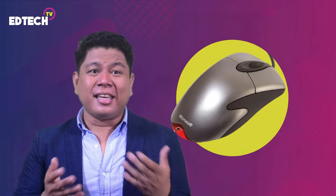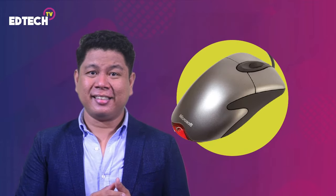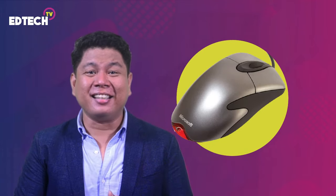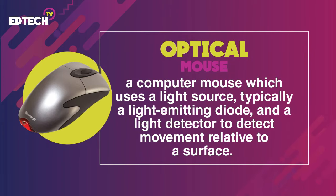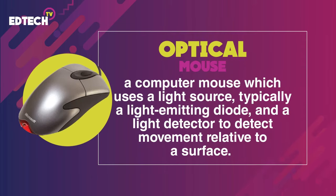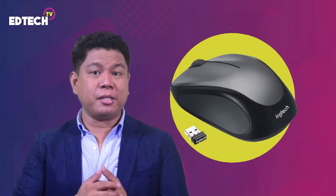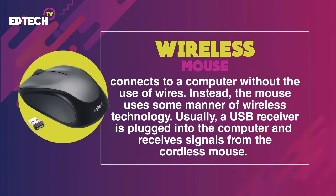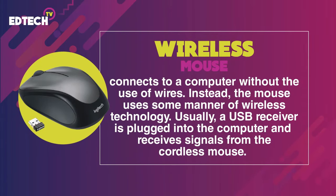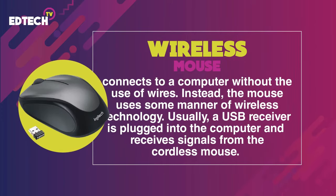This is an optical mouse. It is a computer mouse which uses a light source, typically a light emitting diode, and a light detector, such as an array of photodiodes, to detect movement relative to a surface. This is what we commonly use in computer systems today. Another type that is popularly used nowadays is the wireless mouse. It connects to a computer without the use of wires. Instead, the mouse uses wireless technology like Bluetooth, RF, or infrared radio waves. Usually a USB receiver is plugged into the computer and receives signals from the cordless mouse.